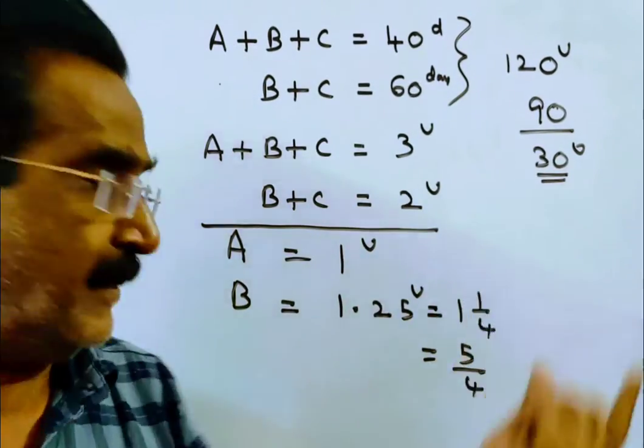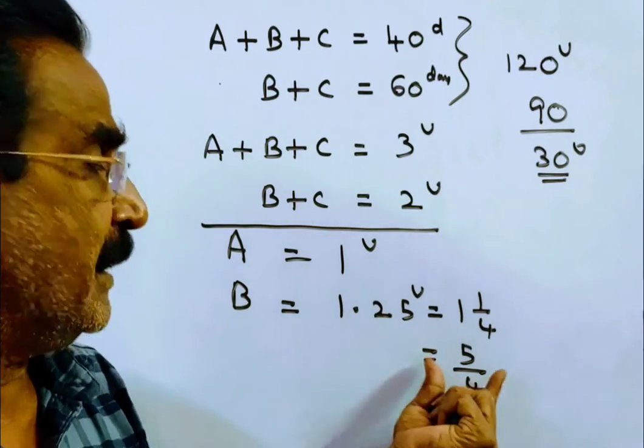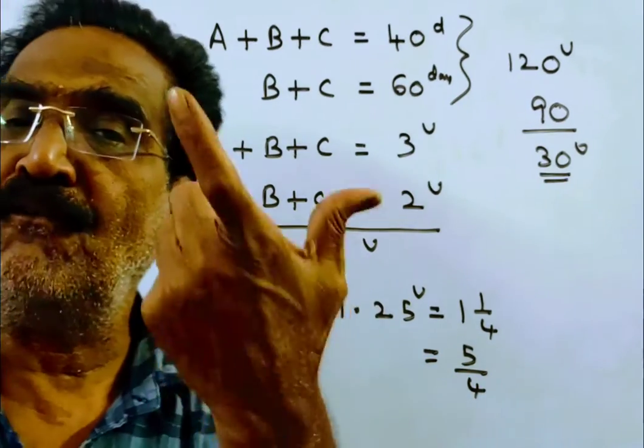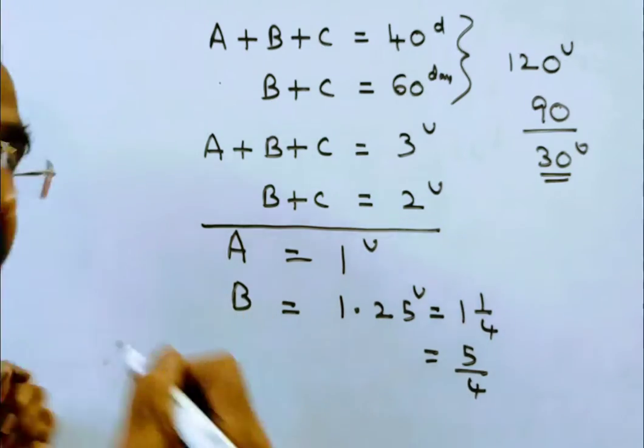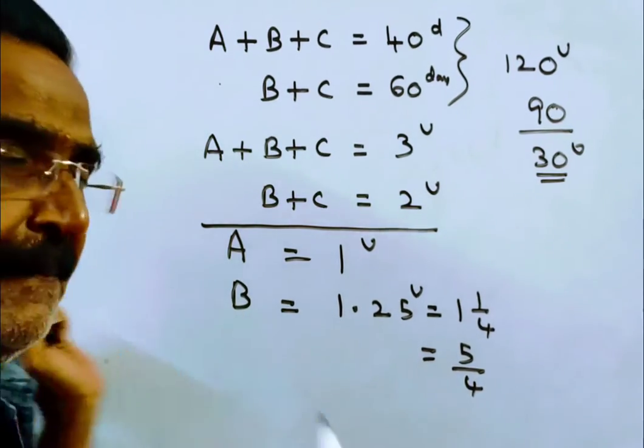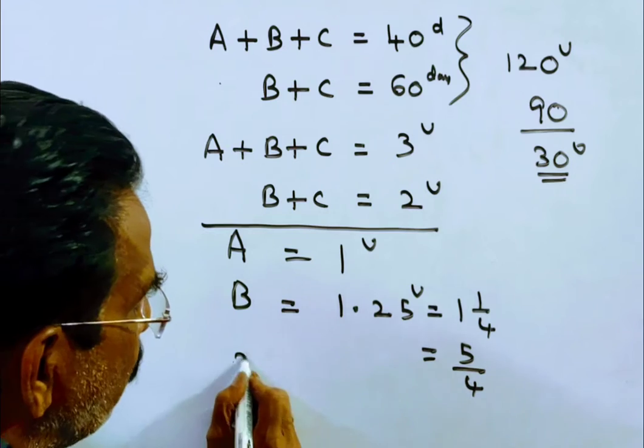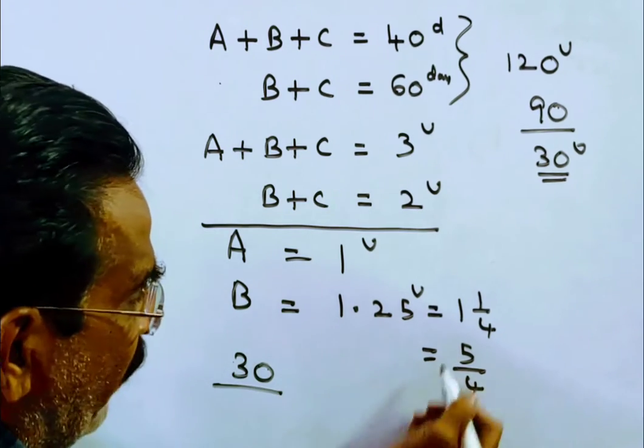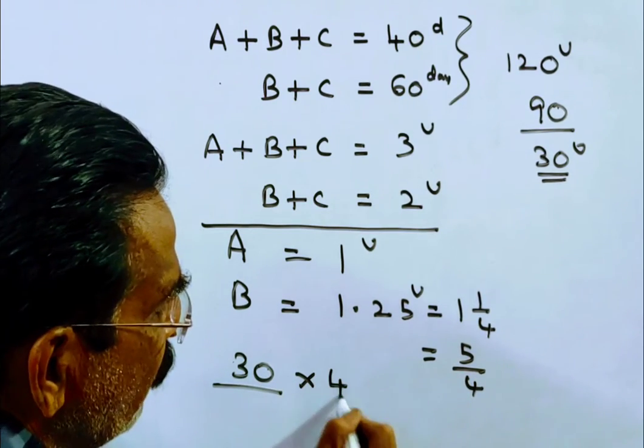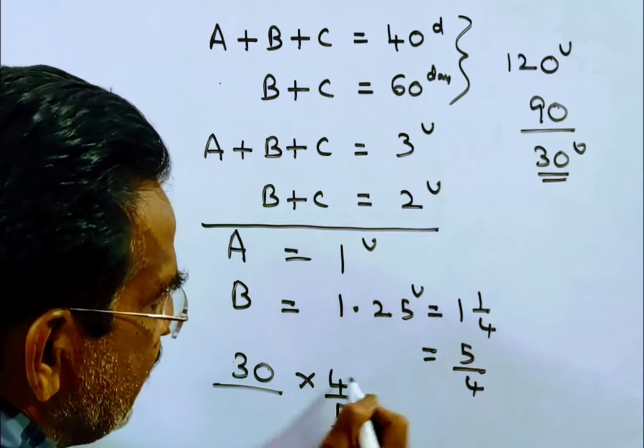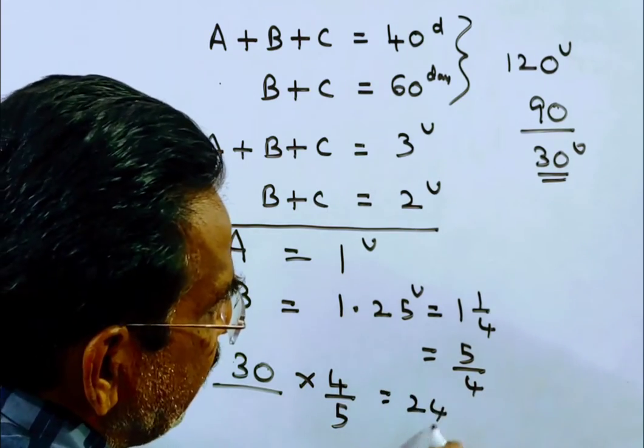This 30 units of work B has to do. The capacity of B is B can do 5 by 4 units of work per day. So the time taken by B to complete the remaining work is equal to 30 divided by 5 by 4, that is 30 times 4 by 5, which equals 24 days.